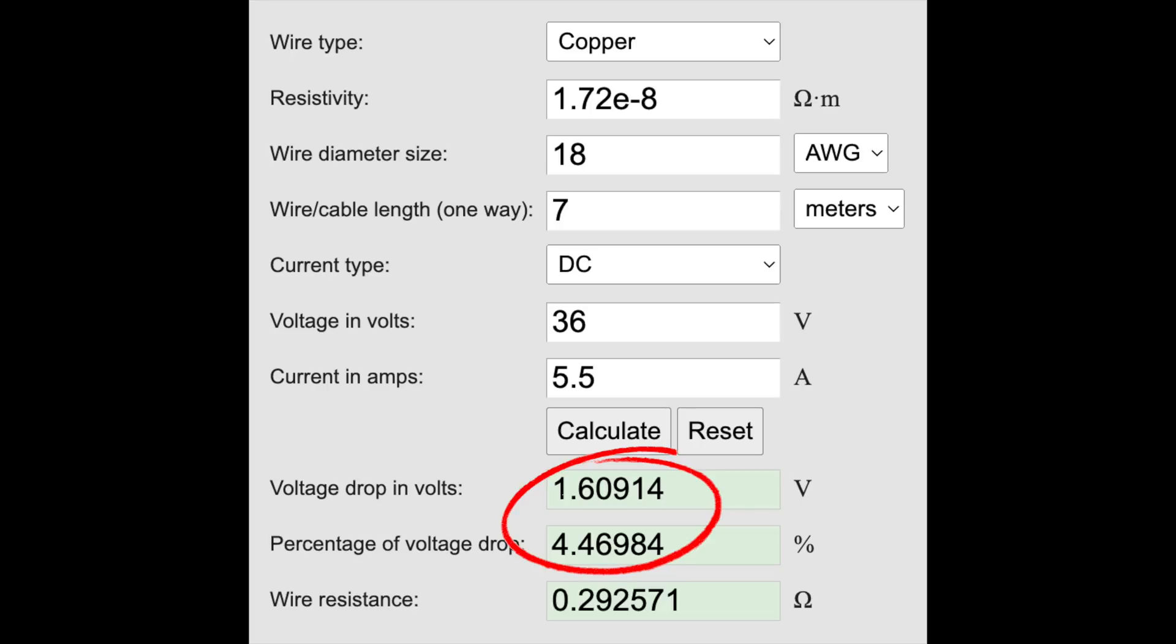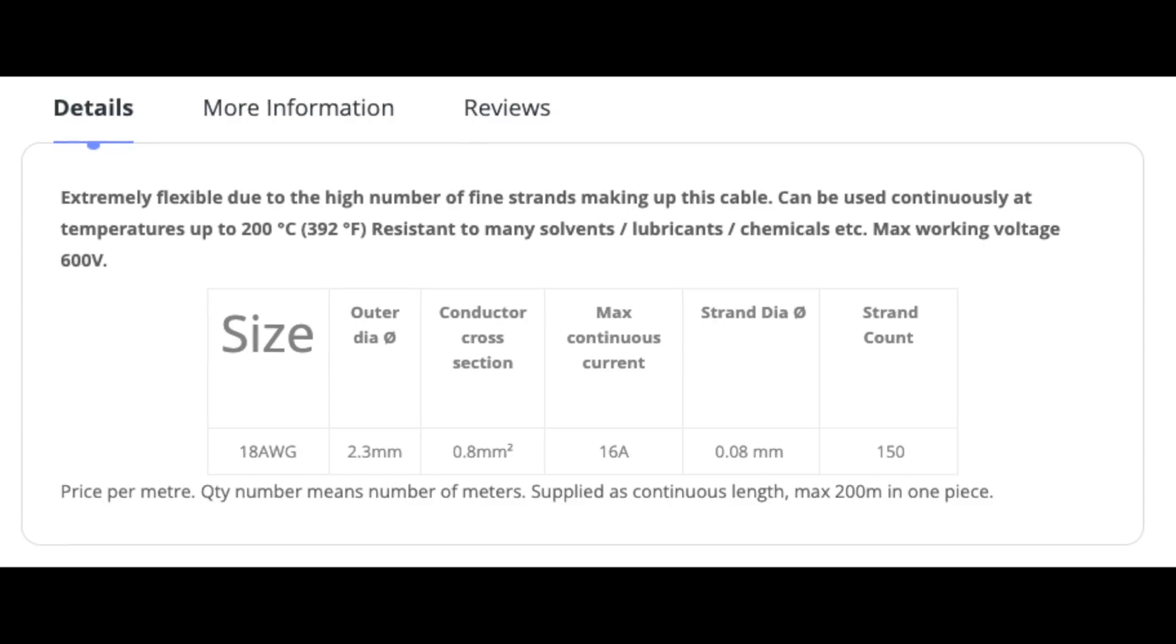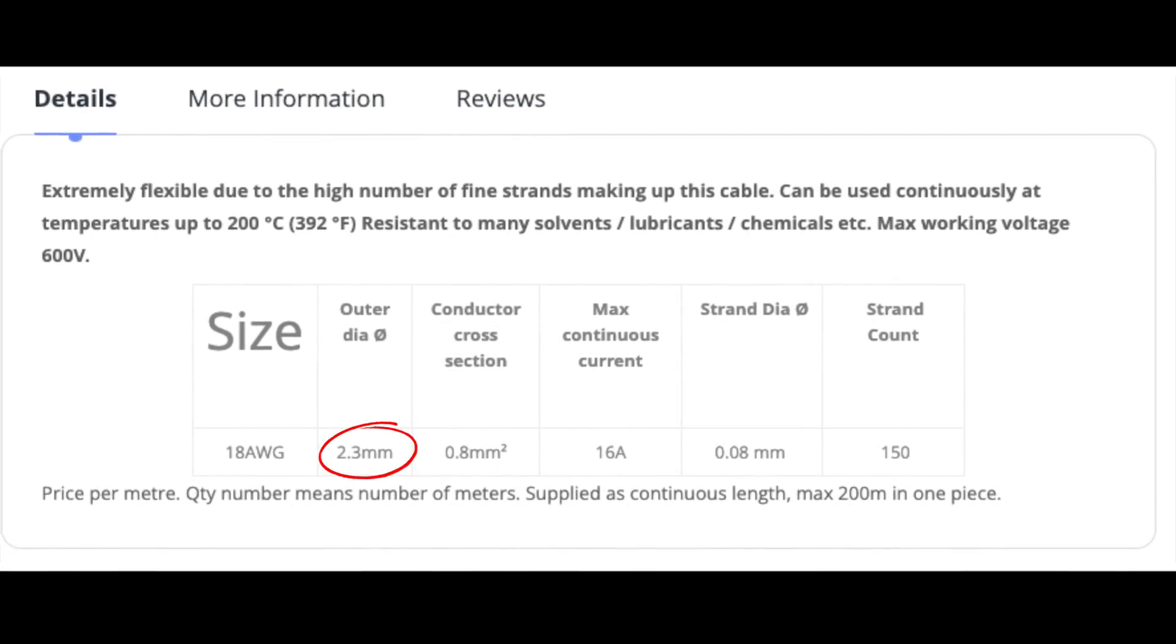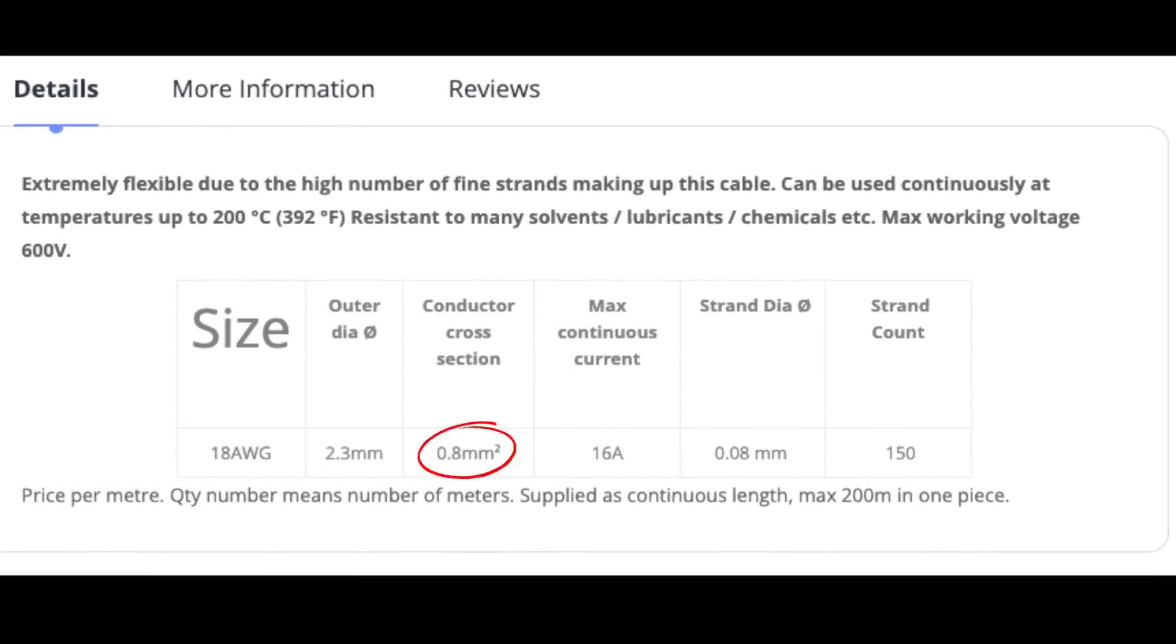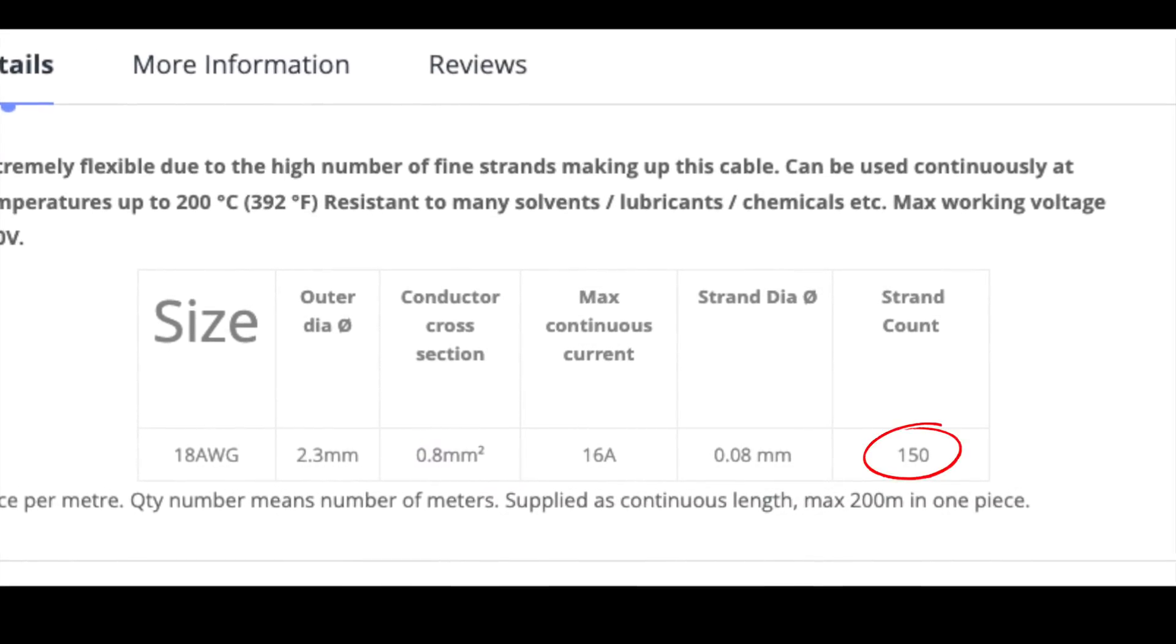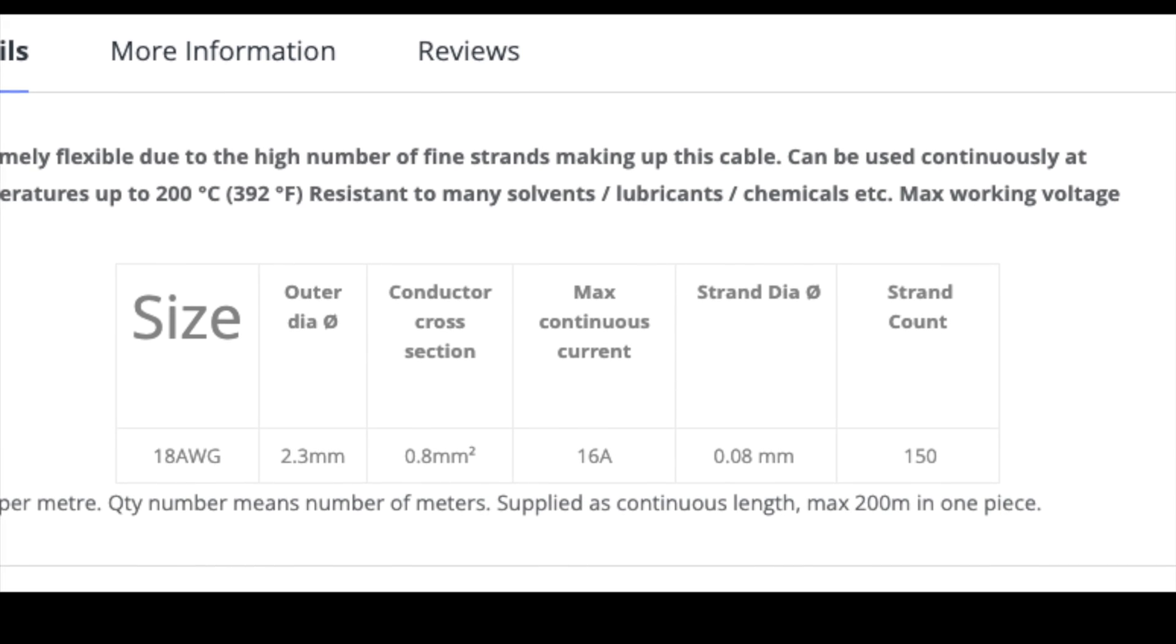I knew from the start that voltage drop was a consideration, but the extent, and how quickly it kicks in, caught me off guard. This was the wire spec sheet, showing all the details you need. The physical size so you can plan your cable routing, the metal cross-section area, and the reassurance that you have 150 strands. Great news for flexing durability.